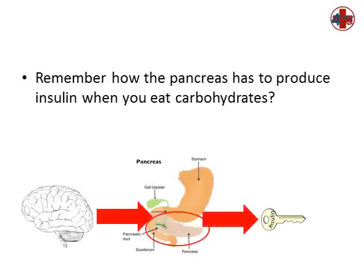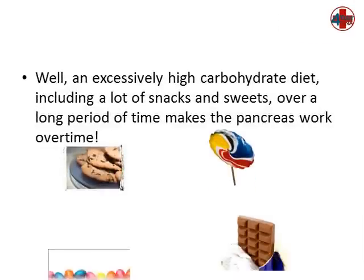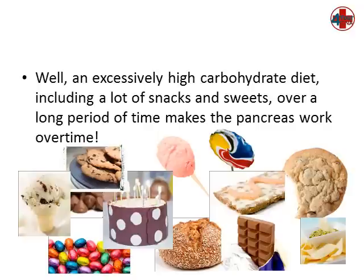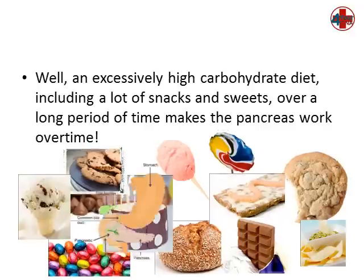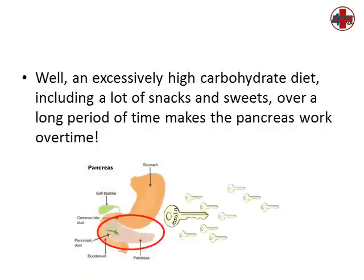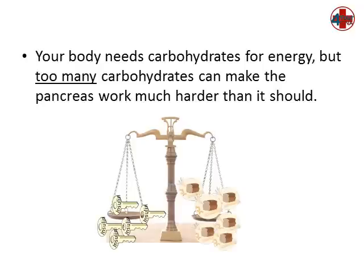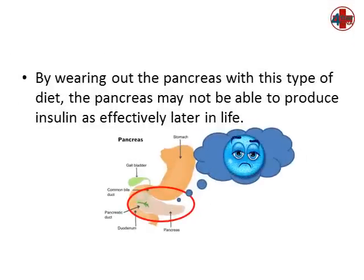Remember how the pancreas has to produce insulin when you eat carbohydrates? An excessively high carbohydrate diet, including a lot of snacks and sweets, over a long period of time makes the pancreas work overtime. Your body needs carbohydrates for energy, but too many carbohydrates can make the pancreas work much harder than it should. By wearing out the pancreas with this type of diet, the pancreas may not be able to produce insulin as effectively later in life.